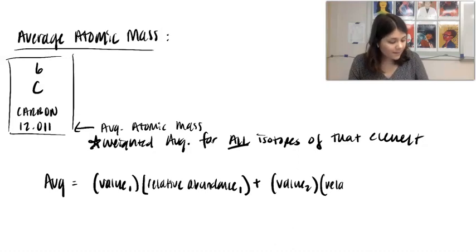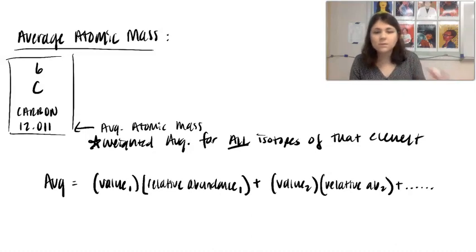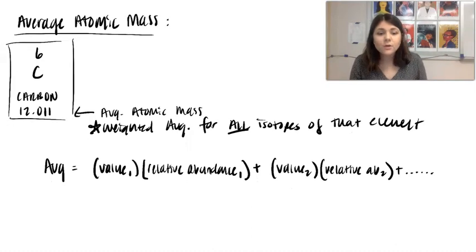Then you take your next value, multiply it by its relative abundance, and then however many that you have, then you continue it. Sometimes it's two, sometimes it's three, you might have ten sometimes.